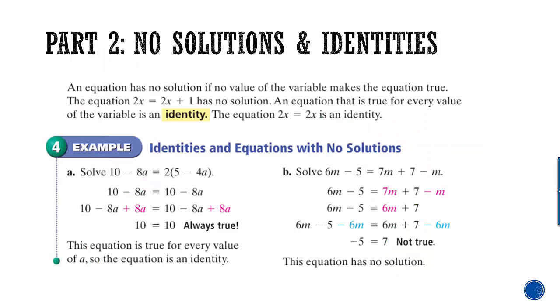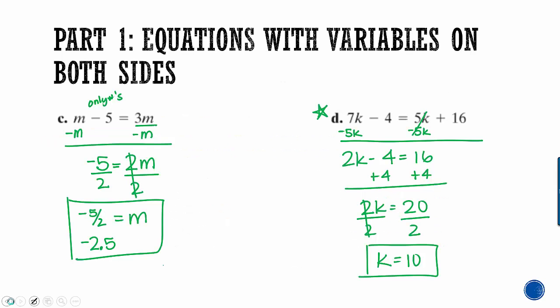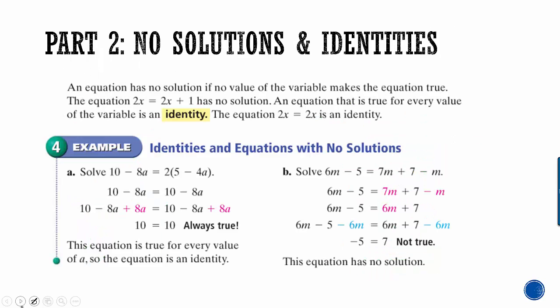All right, the second part, no solutions and identities. All of the equations that we've been solving up to this point have one solution. They have a number. When we get done with the problem, we see something like this. m equals negative 5 halves, or k equals 10. We get an answer. But that doesn't happen all the time.